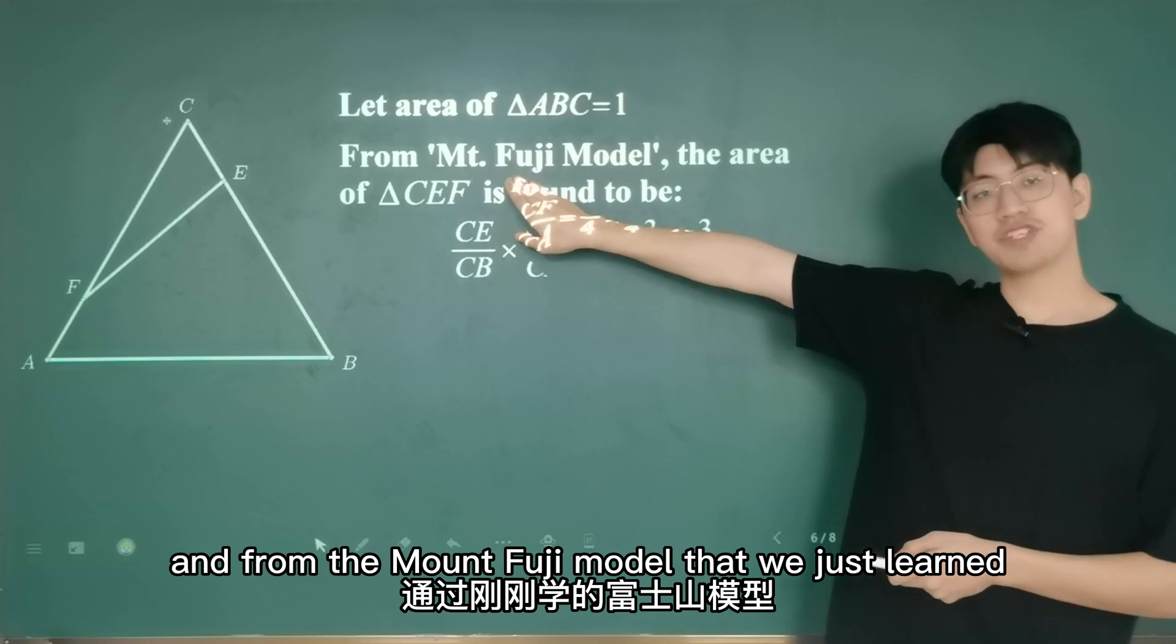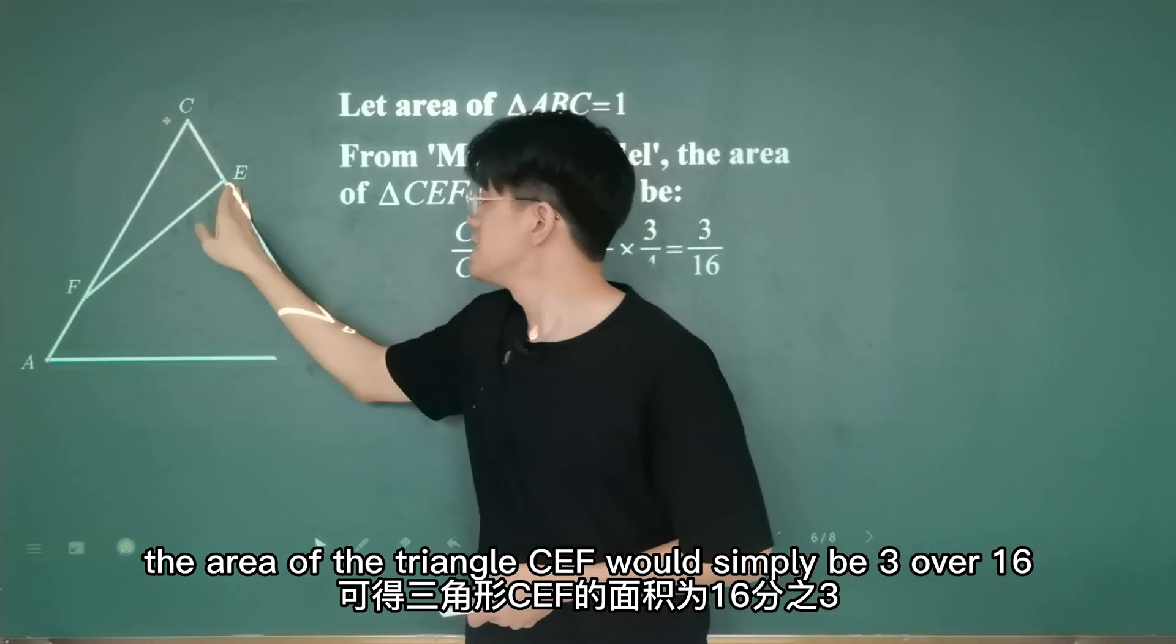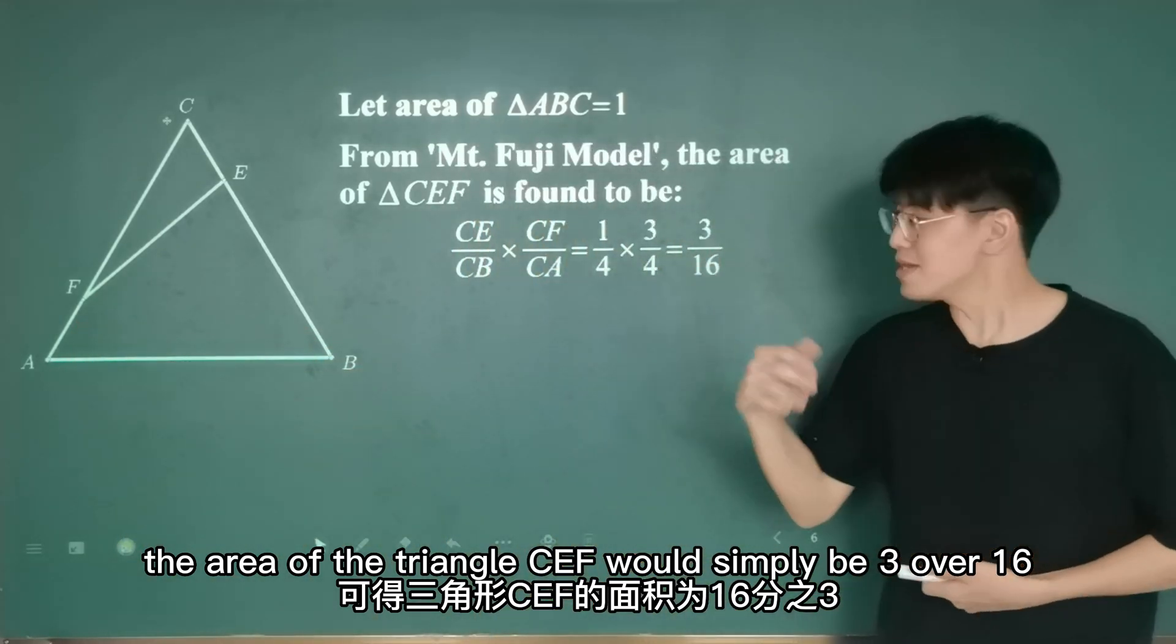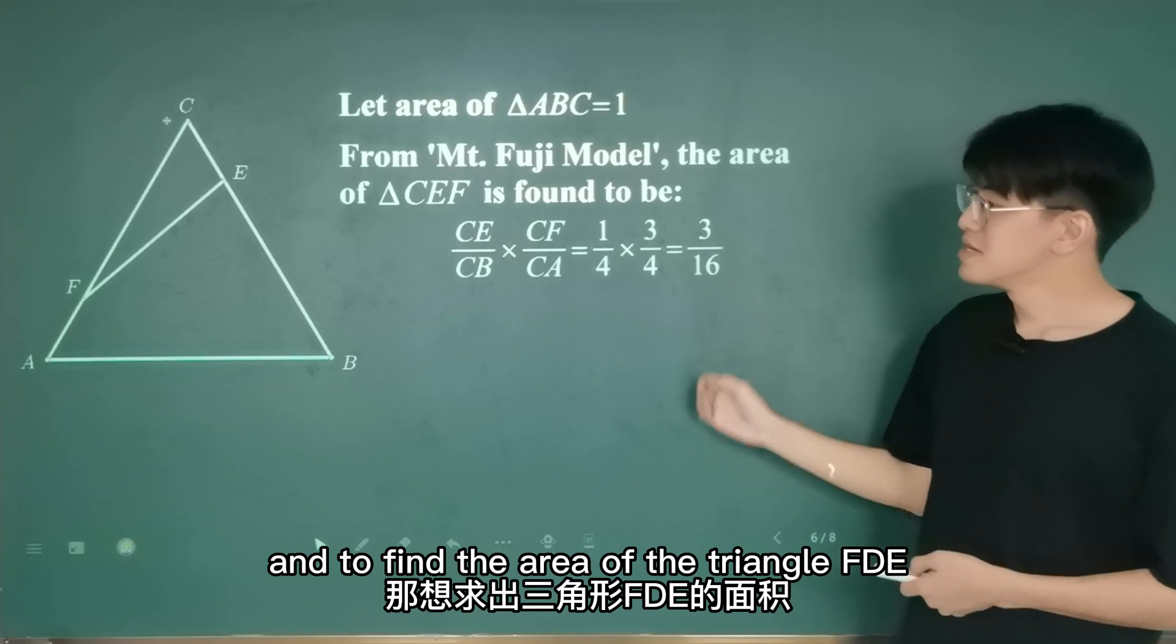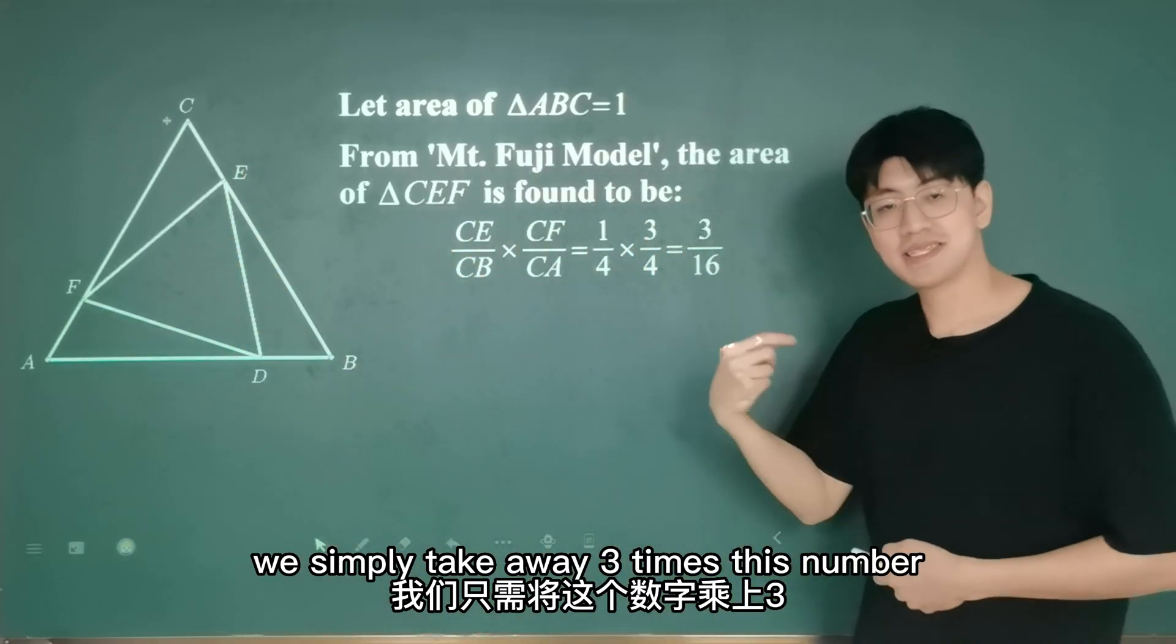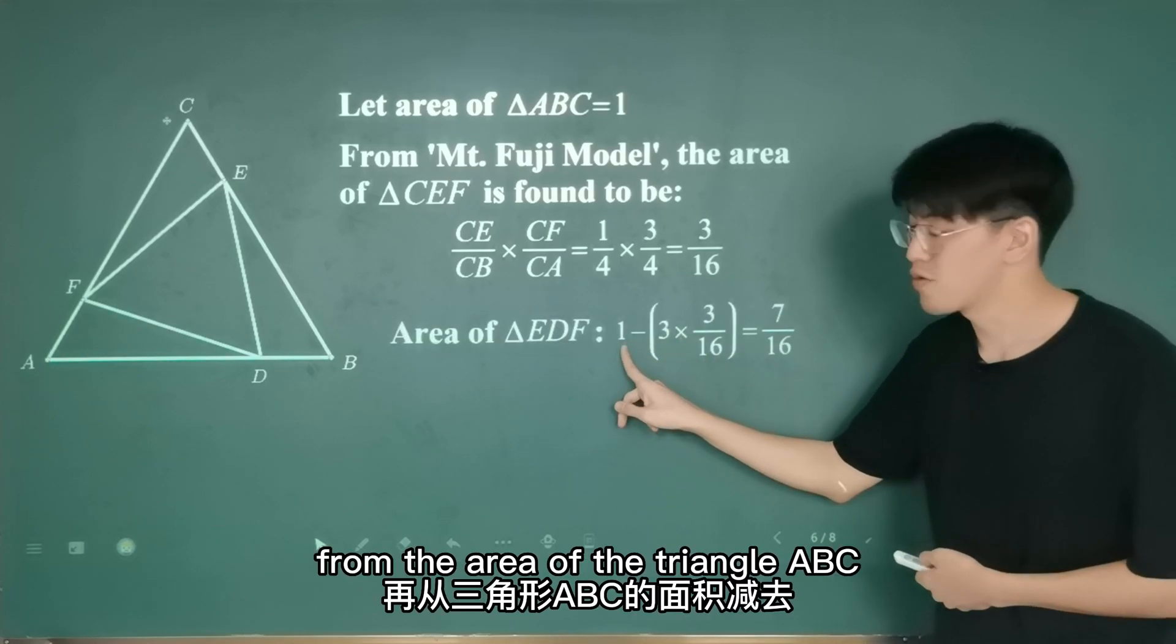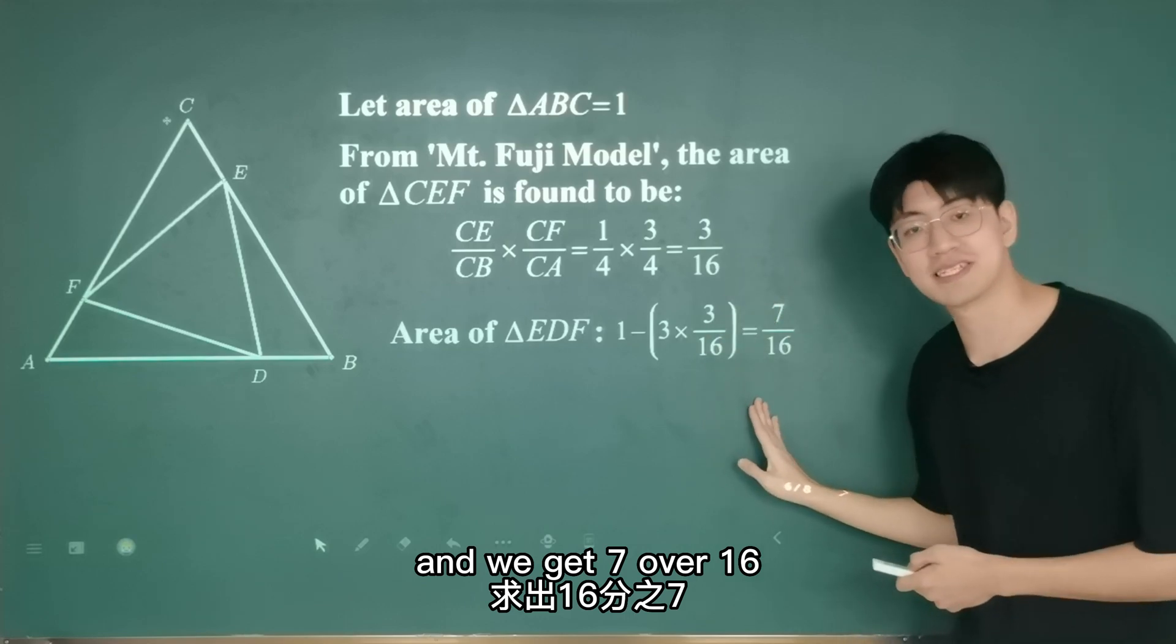And from the Mount Fuji model that we just learned, the area of triangle CEF would simply be 3 over 16. And to find the area of triangle FDE, we simply take away three times this number from the area of triangle ABC, and we get 7 over 16.